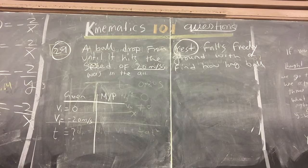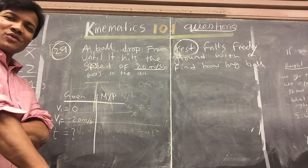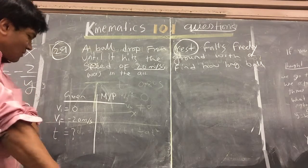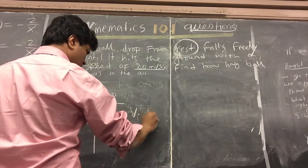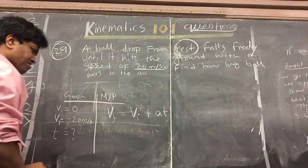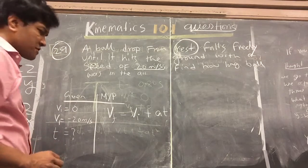The kinematic equation that we know, we're going to use that kinematic equation to solve this problem. So v equals v₀ plus at. We're going to solve it for t.